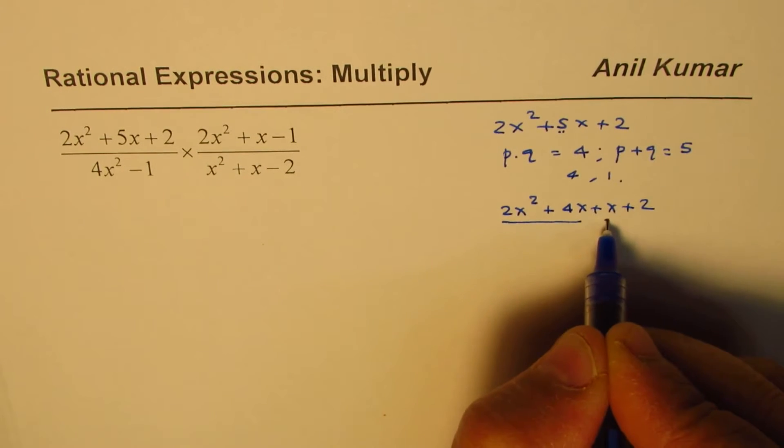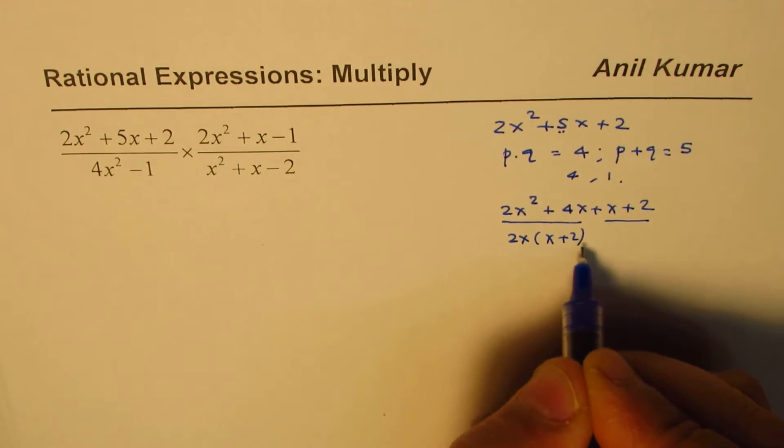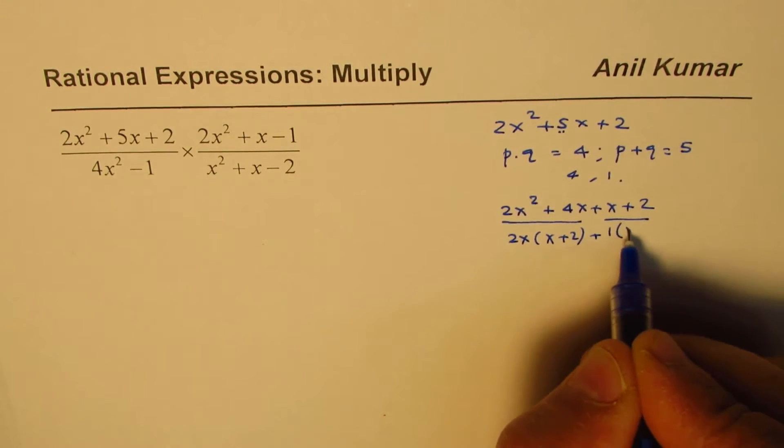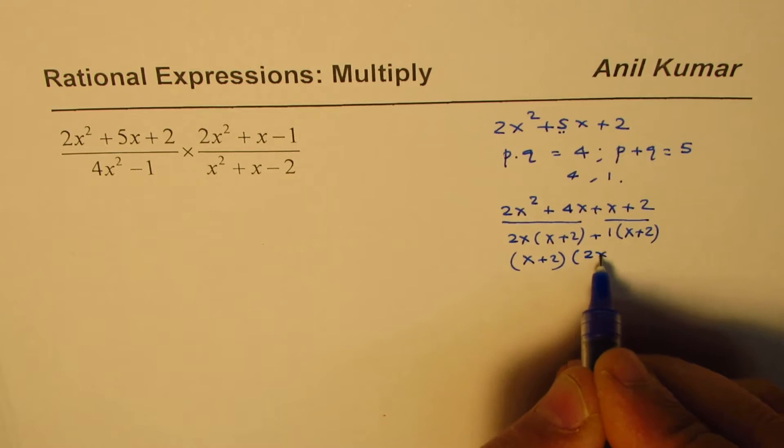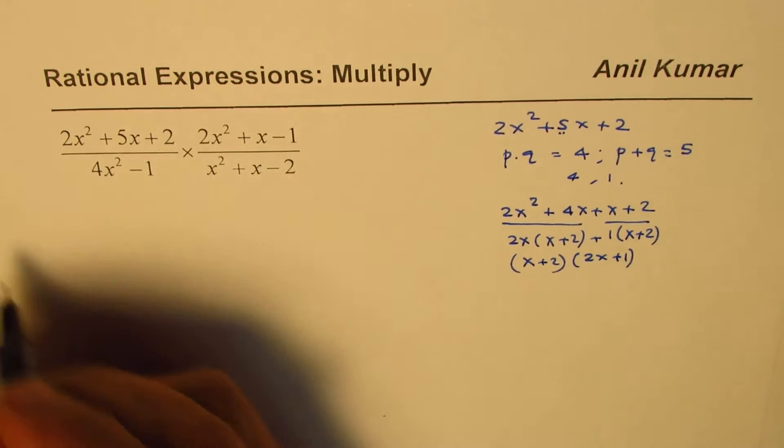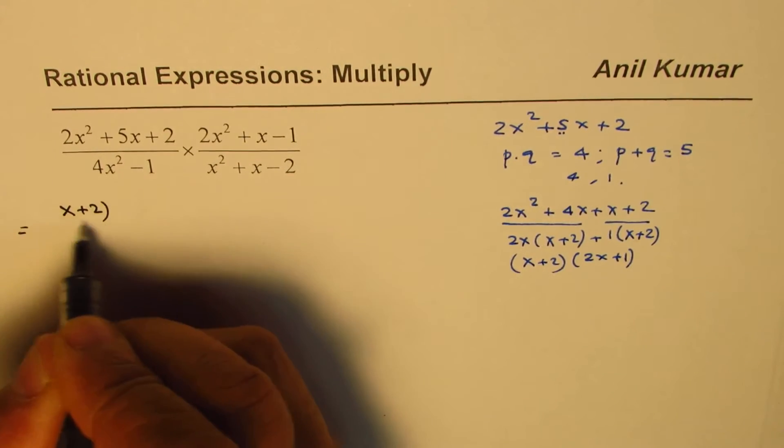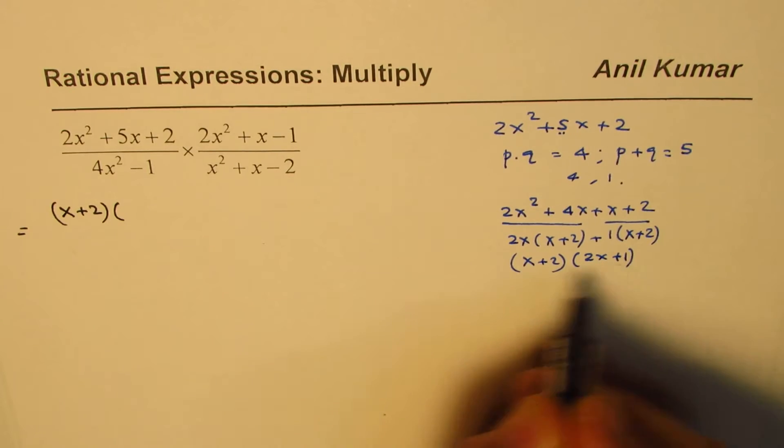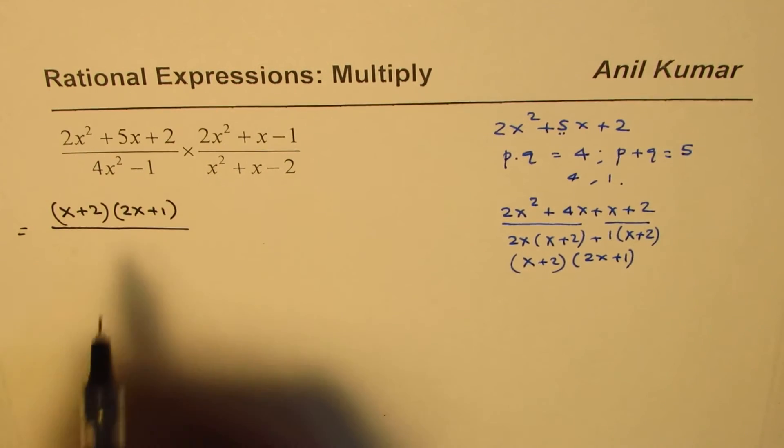So, we get 2x common. We have x plus 2. Here, we have one common, x plus 2. x plus 2 is a common factor. So, we get x plus 2 times 2x plus 1. So, now we should write the numerator as equal to x plus 2 times 2x plus 1, divided by.